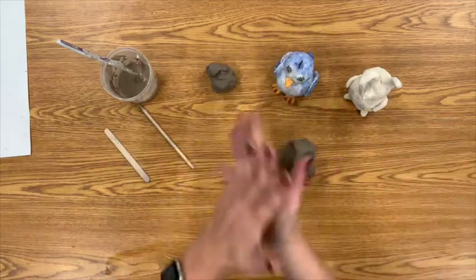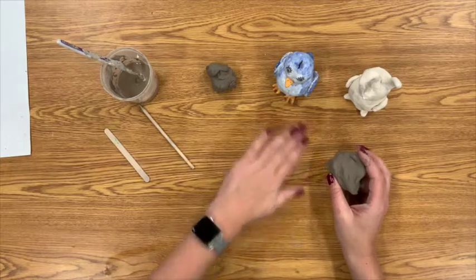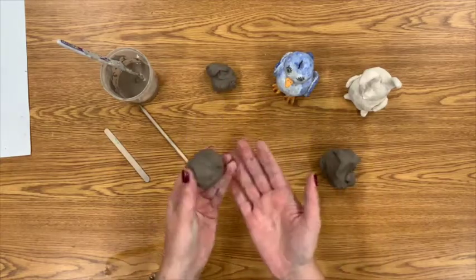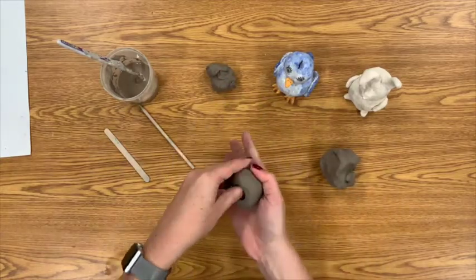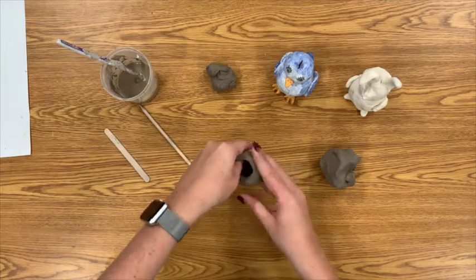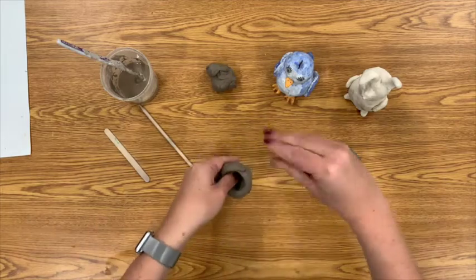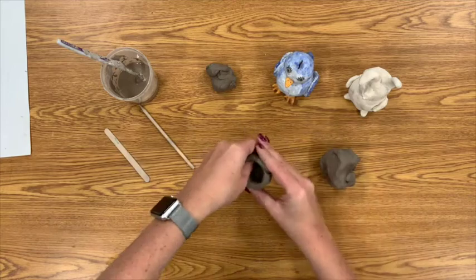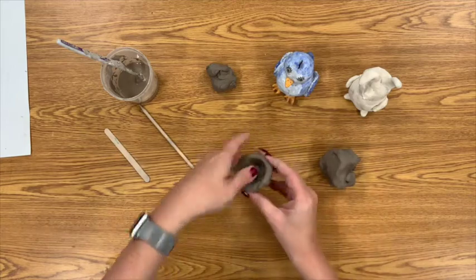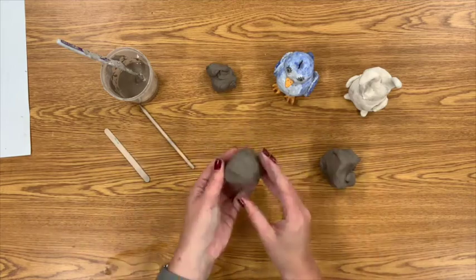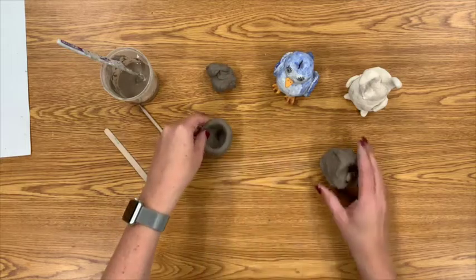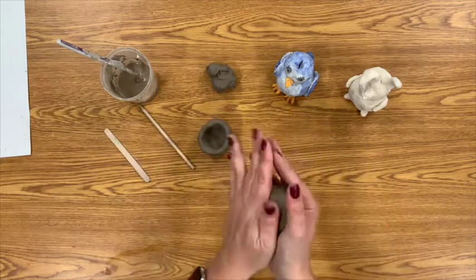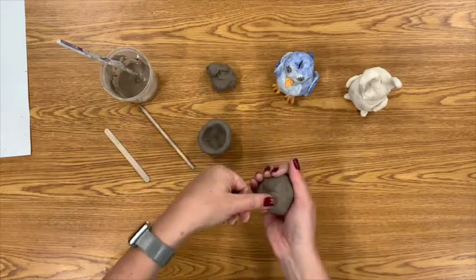So take one of your larger pieces, roll it into a ball, and we're going to turn this one into a pinch pot. Push your thumb into the center of the clay, and you're just going to start pinching and rotating your fingers around the pot. Notice how to start, I only have one thumb inside my pot, and I'm using the other four fingers to slowly go around and open up the center of the pot.